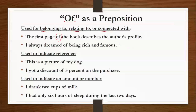Example: 'The first page of the book describes the author's profile.' जो हमारी book है, उसका first page author के बारे में बताता है। 'Page of the book' मतलब book का एक page — यह page book को ही belong करता है, इसलिए हमने 'of' का use किया है।